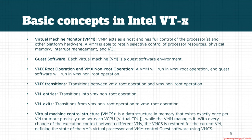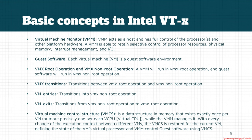The transitions between VMX root mode and VMX non-root mode are called VMX transitions. VM entries are the process of transitioning from VMX root mode to VMX non-root mode. VM exits occur whenever certain events happen in the target virtual core — this is a transition from VMX non-root mode to VMX root mode. If you want to know more about virtualization technology, see the 'Hypervisor from Scratch' tutorial, as this tutorial is not mainly about hypervisors.